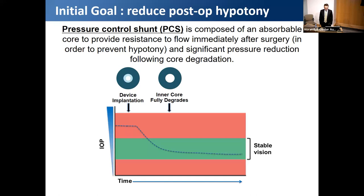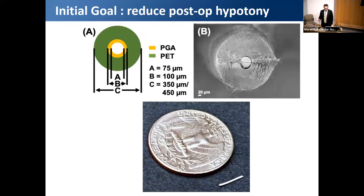The sleeve degradation allows a soft landing of IOP reduction after the early post-operative period. The implant lumen was about 75 microns before the inner sacrificial sleeve degraded, expanding to 100 microns after. The stent was fabricated with an inner template wire and is very small, designed to be placed in the anterior chamber and drain into the subconjunctival space. In normotensive rabbit eyes, the sleeve blunted early post-operative IOP reduction compared to shunts without the sleeve, and led to a gradual increasing IOP reduction over about 28 days.